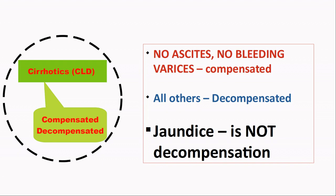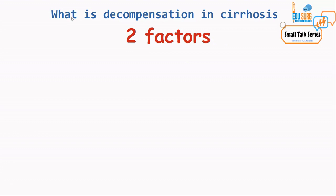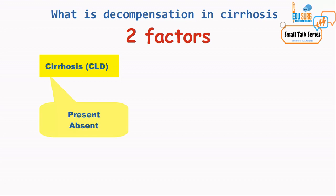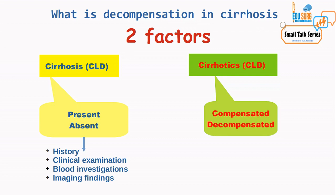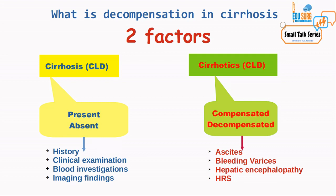So — no ascites, no bleeding varices: your patient is compensated CLD. To summarize this small talk: whenever you see a chronic liver disease patient, first identify whether the patient has CLD using history, clinical examination, blood investigations, and imaging findings. Once confirmed, the patient is decompensated if they have ascites, bleeding varices, hepatic encephalopathy, hepatorenal syndrome, or spontaneous bacterial peritonitis. Patients without these five features are compensated chronic liver disease.